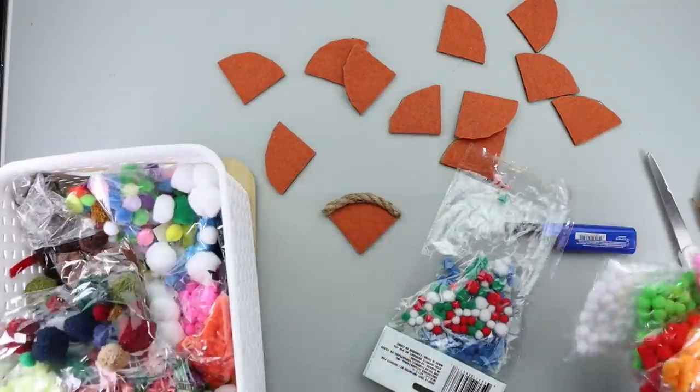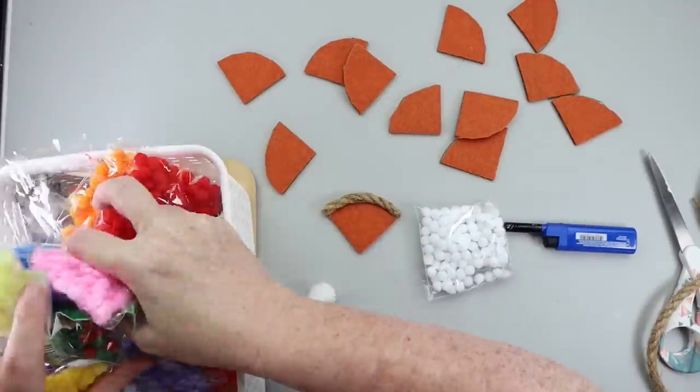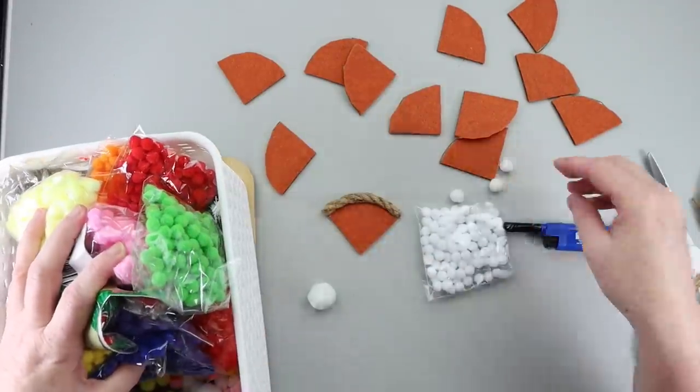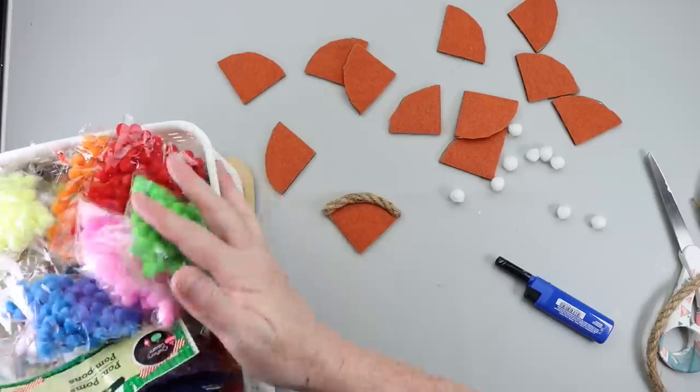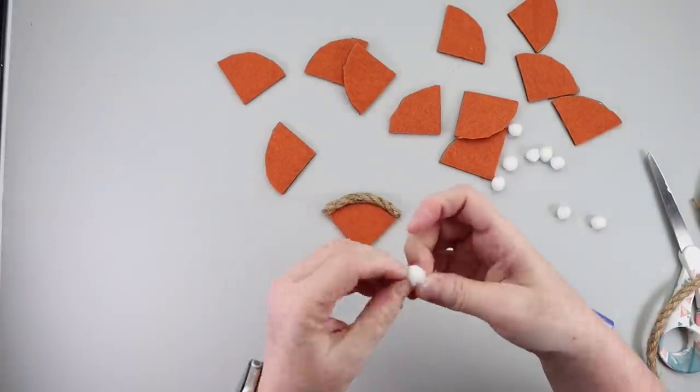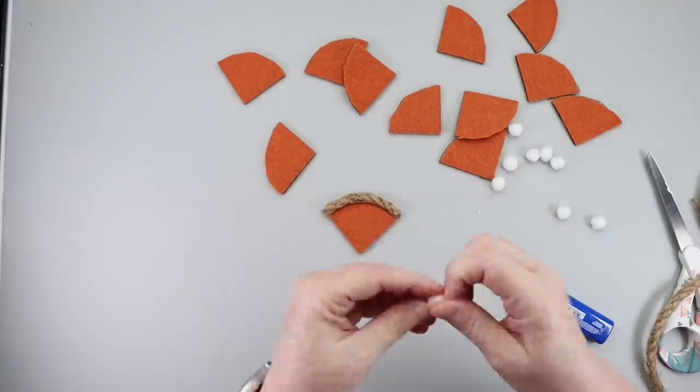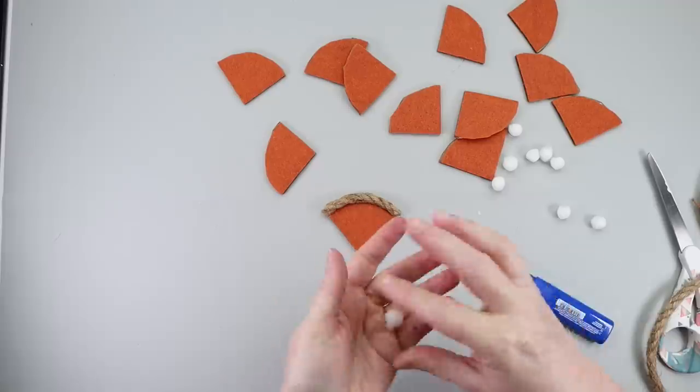Next up is whipped cream time so I grabbed my bucket of pom-pom balls and tried to decide which one would be the best size. Found some that worked and just kind of rubbed them a little bit to kind of fluff them up and then again attach them to the center of these pie pieces with hot glue.